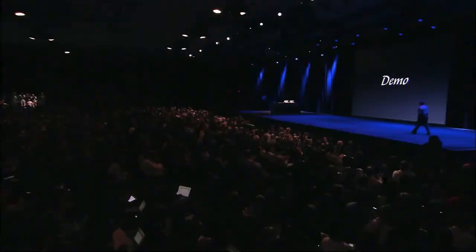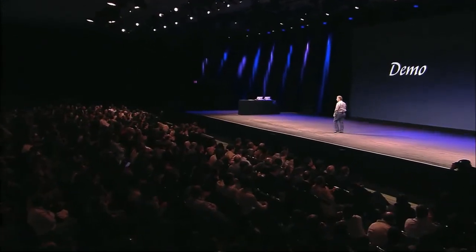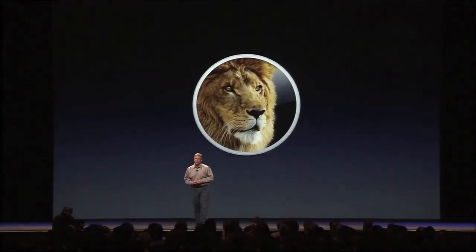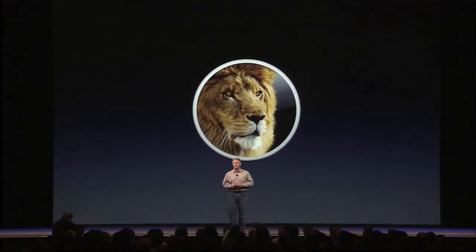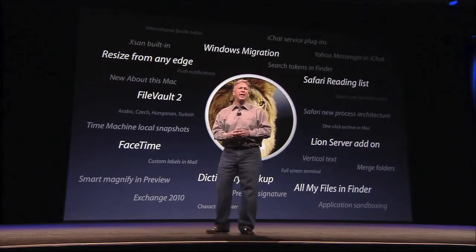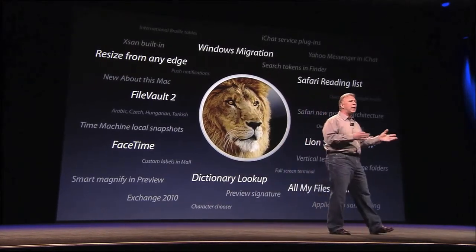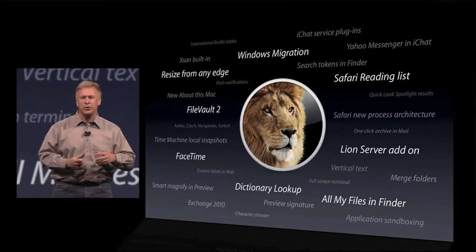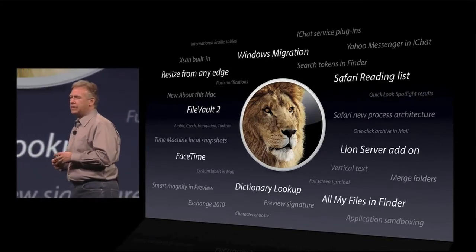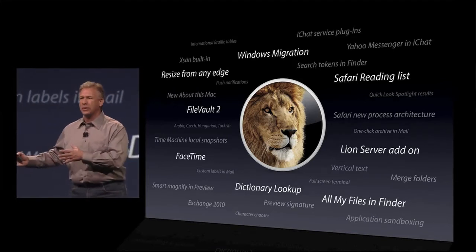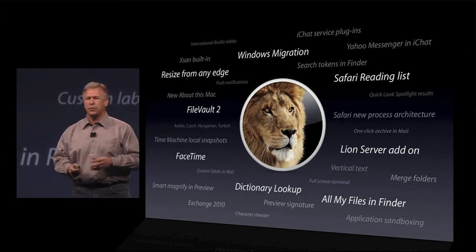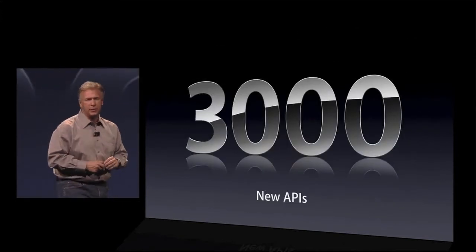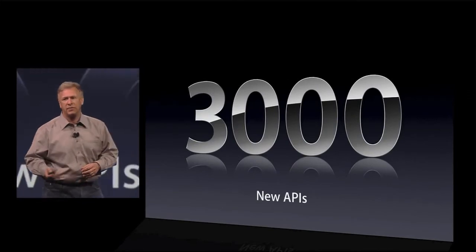So those are the top 10 features of Lion. And there is so much more for you to learn about and discover in Lion. For example, Windows users who want to upgrade to a Mac now have a migration feature in Lion to help them get to a better computing experience. There's FileVault too — for all of you who want more security and encryption on your hard drive. FaceTime's built in. Even Server is all new with Lion — it's just a bunch of applications you can purchase to run on top of Lion. And for all the developers out here, we have over 3,000 new APIs for you to take advantage of the power of Lion.